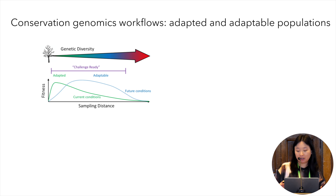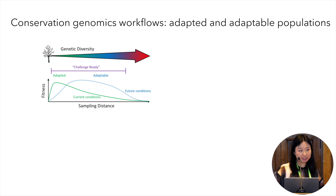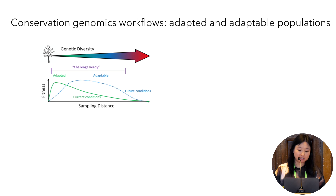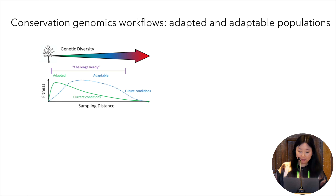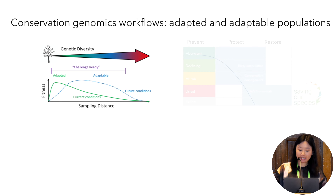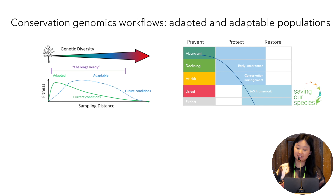So, genetically diverse, adaptable, well-suited to site conditions, adapted, and resistant to myrtle rust. I'll talk about species listed as critically endangered due to myrtle rust.